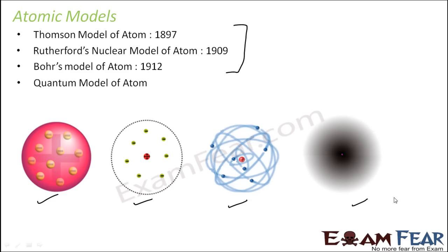This is the actual model — the actual truth — but these are all postulates. You can see how this is all theory, because at that time physics was not advanced and they didn't have instruments to actually view a particular atom, since atoms are very small in size. These are all guesswork.